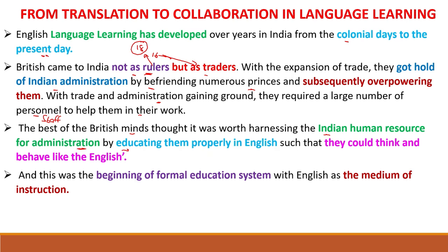How? By educating Indians properly in English. Our Indian tradition was following religious languages, but to interact with the British, English was the one language — the communication language between Britishers and Indians. They thought it better to educate the Indians so they could become staff and think and behave like the English. This was the beginning of the formal education system with English as a medium of instruction.